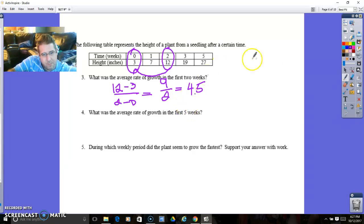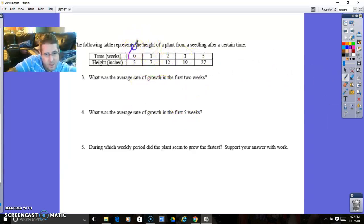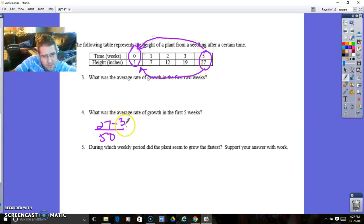What was the average rate of growth in the first five weeks? Now we've got a new interval of time, the first five weeks from start to end. So that's 27 minus 3 over 5 minus 0. That's y₂ minus y₁ over x₂ minus x₁. 27 minus 3 is 24. 24 over 5 minus 0 is 5. 24 divided by 5 is 4.8.